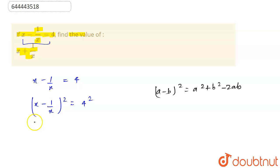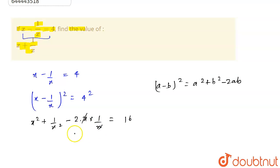So we will apply this formula. It will become x squared plus 1 upon x squared minus 2 times x times 1 upon x is equal to 16. So x and x will cancel out.